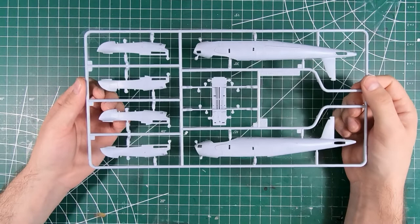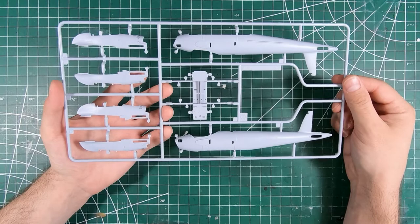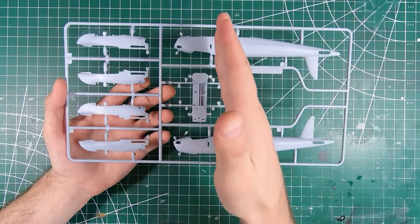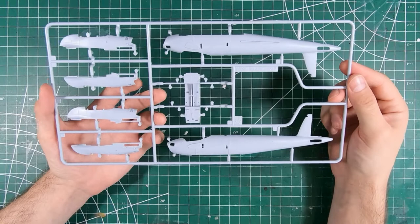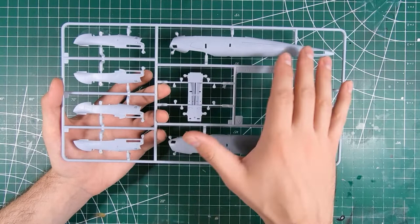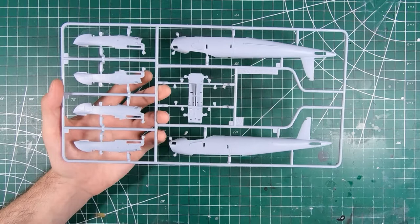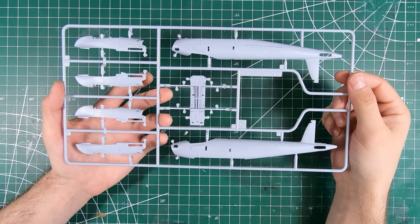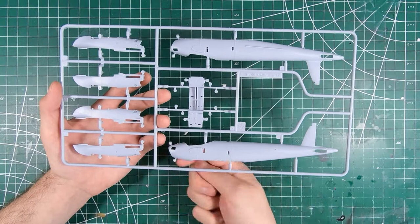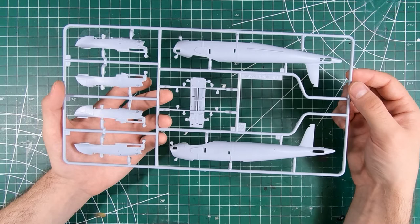Next up we have our fuselage halves and our engine nacelles. Now you'll notice that the fuselage is complete from nose to tail, no separate forward fuselage. So Airfix has painted themselves into a little bit of a corner because they're not going to be able to capitalize on the variants of the Mosquito and release the fighter bomber and the radar equipped night fighter variants as well. Maybe they're planning on just having a completely separate sprue insert. Looks like we're going to be limited to the bombers and the recon aircraft as it sits now.